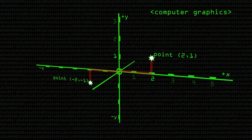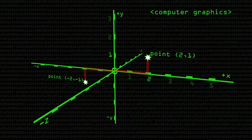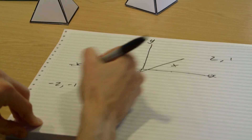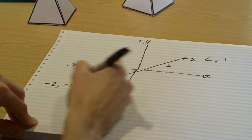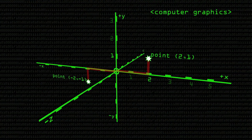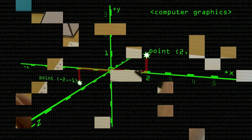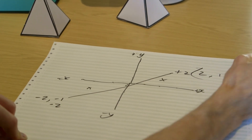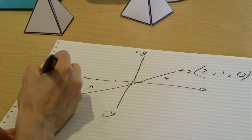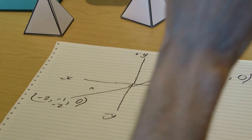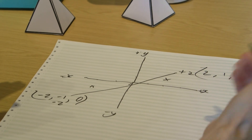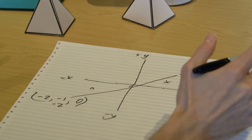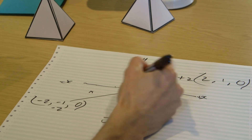If we want to specify points in three dimensions, we simply add another axis. Going through the middle, it's perpendicular to x and y — and this is called z, so we have plus z and minus z. Now a point like (2, 1) is on plane zero in z, making it (2, 1, 0). Using three-number coordinates, we can specify any unique point relative to the origin and the axes we've defined.